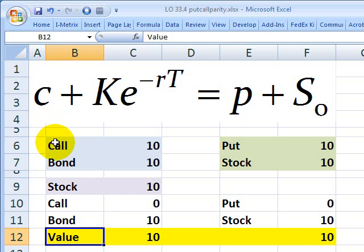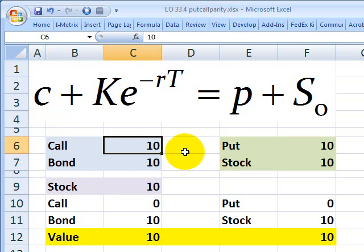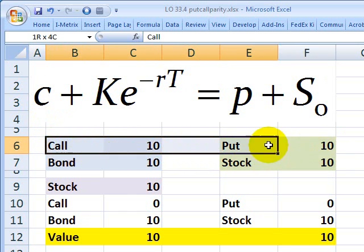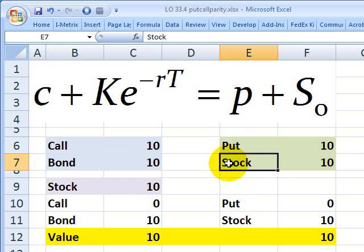To illustrate, let's assume that the call here has a strike price of $10 and the put also has the same strike price of $10. That's an assumption. The call and the put have to have the same strike price. They are going to be options on the stock that, let's also say, currently has a value or price of $10.